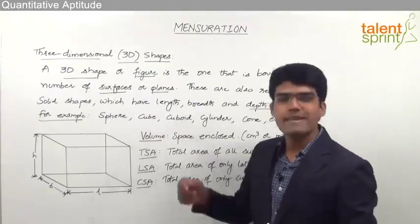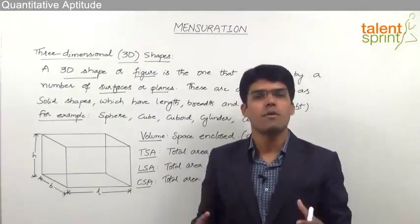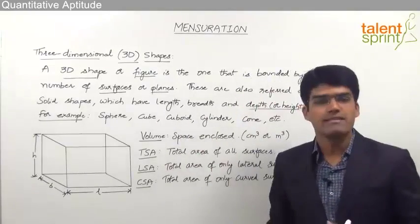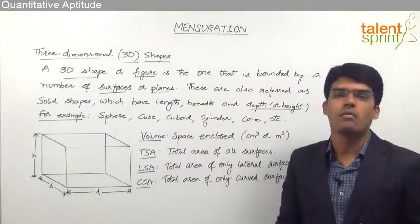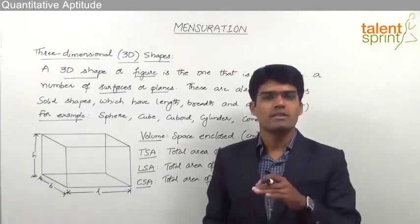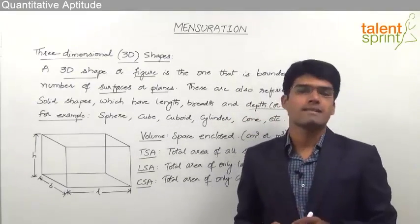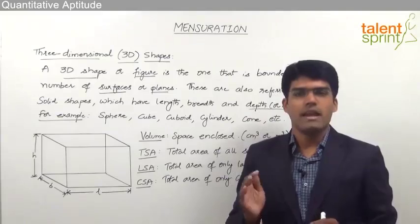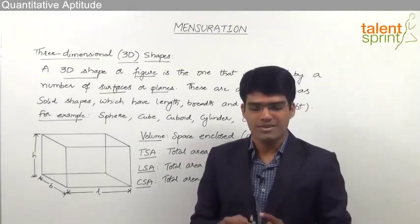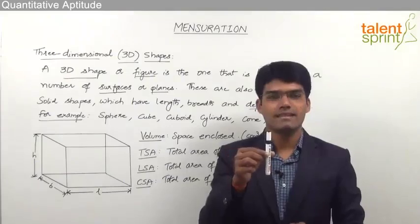A cube is like a squared box — a box which is in the shape of a square from all sides. A cuboid is like a rectangular box. A cylinder is the one which has the base and top as a circular surface, and it is bounded by a curved surface. For example, this pen here can be taken as a cylinder.